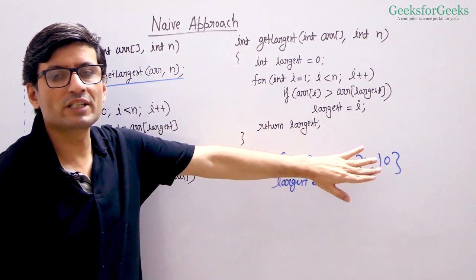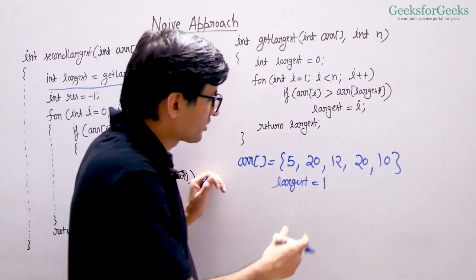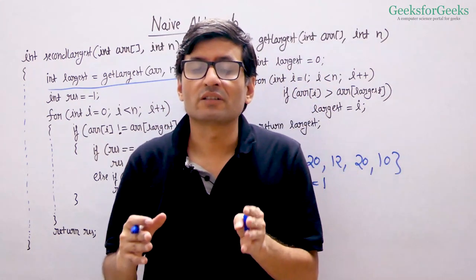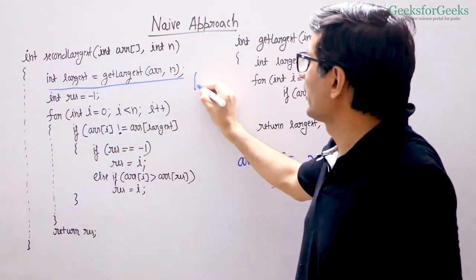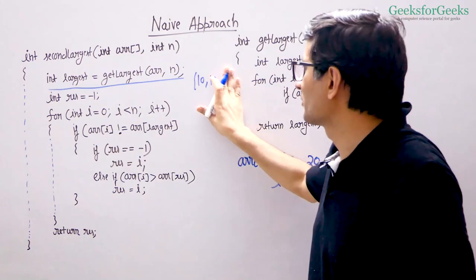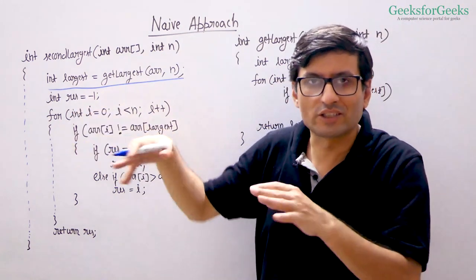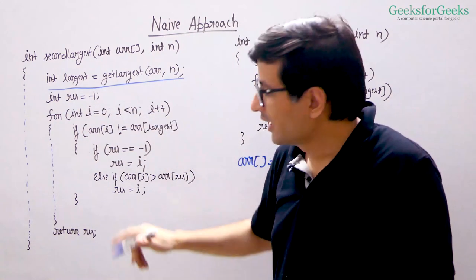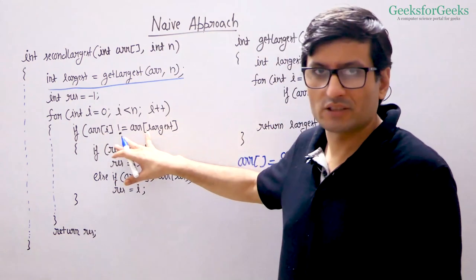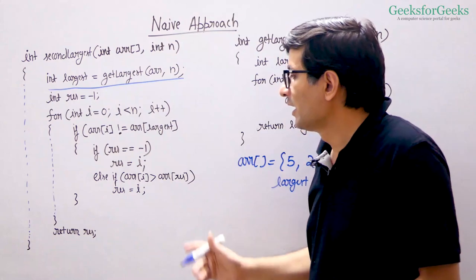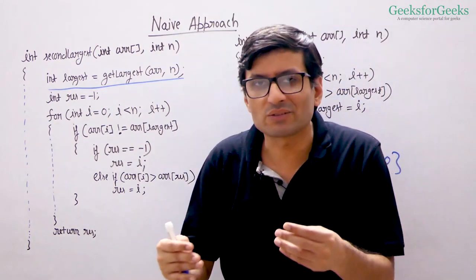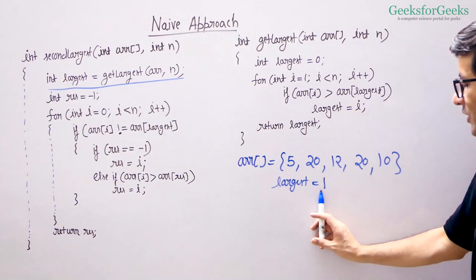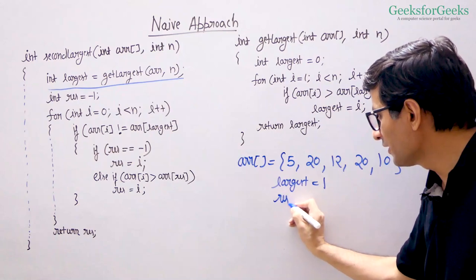Now that we have the largest element, we traverse the array again focusing only on elements not equal to the largest element. Note that the secondLargest function can return minus 1, because there can be arrays like 10, 10, 10 where there is no second largest element. That is why we initialize the result as minus 1, not as 0 like we did for largest — because there might not exist any second largest element.